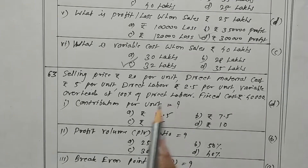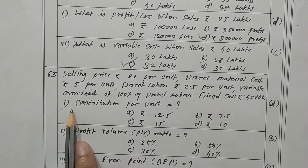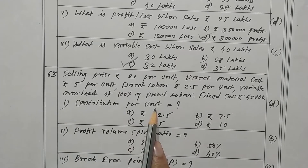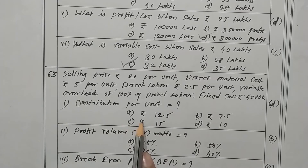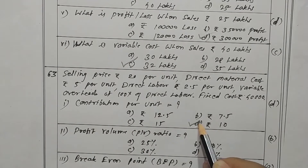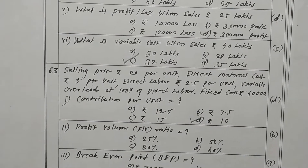The first question asks for contribution. Contribution is rupees 10 per unit. Option D is the correct answer.